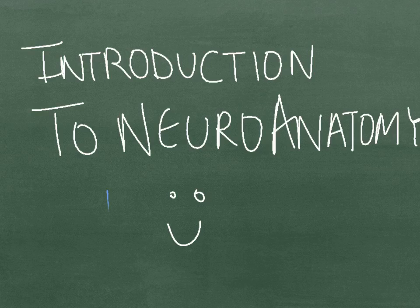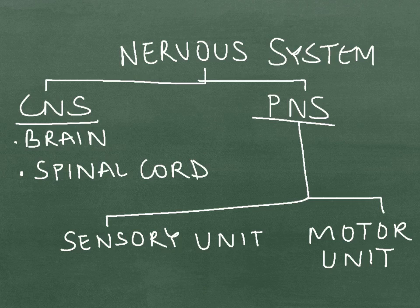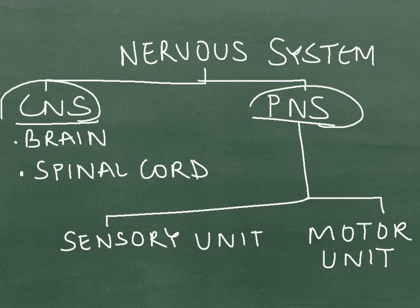Today's topic is introduction to neuroanatomy. The nervous system is divided into the central nervous system and the peripheral nervous system. The central nervous system consists of the brain and the spinal cord, whereas the peripheral nervous system consists of the sensory unit and the motor units.